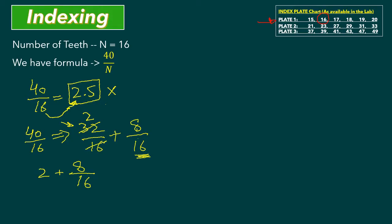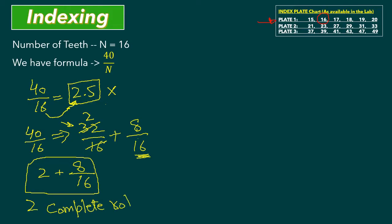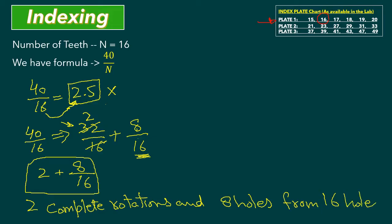Since plate number 1 has 16 holes in 360 degrees, our answer is: 2 complete rotations and 8 holes from 16 holes. This is the final answer for N equals 16.